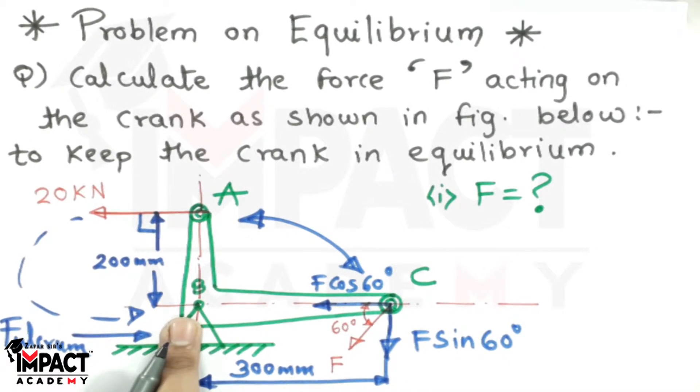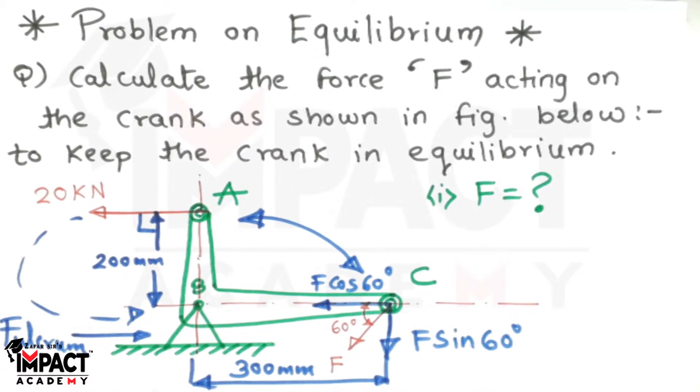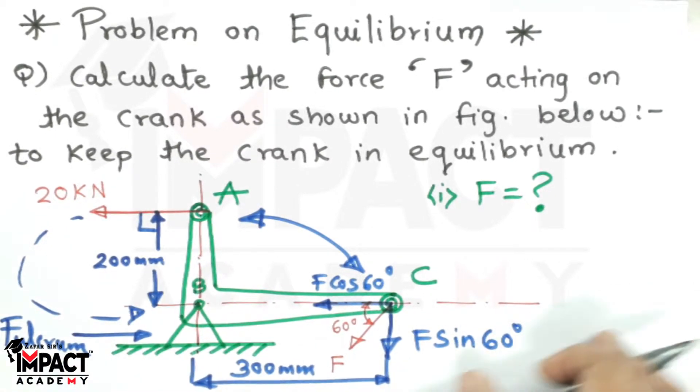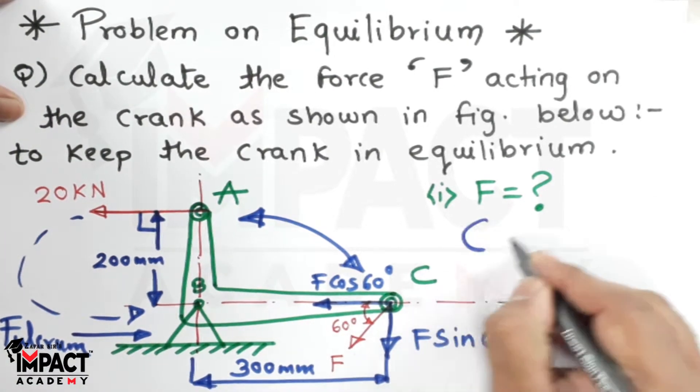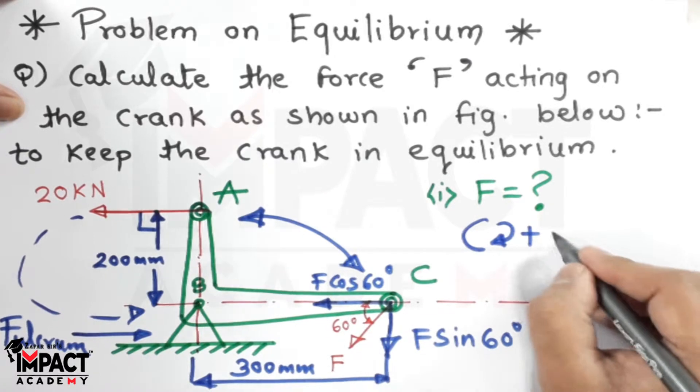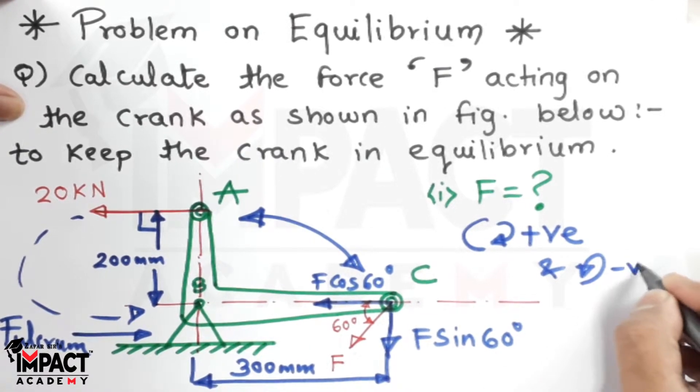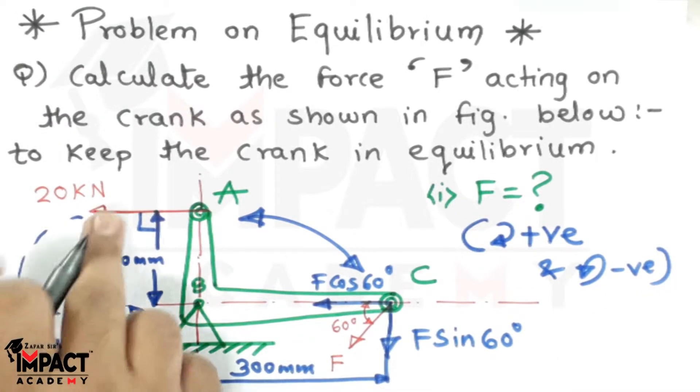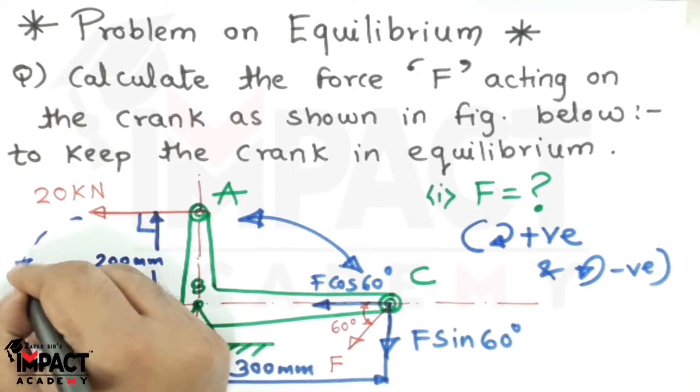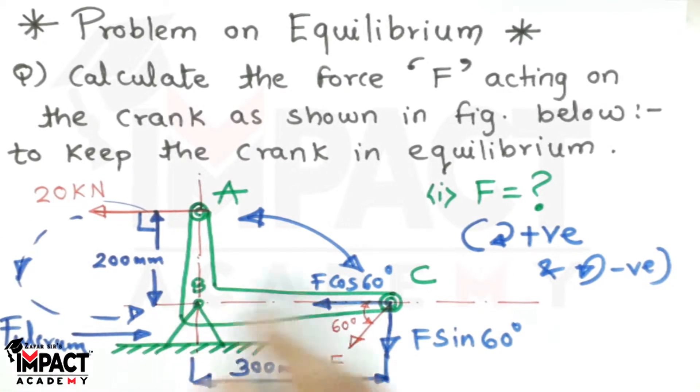I would be taking the moments of all forces about point B and equating it to zero, because that is the condition of equilibrium. As per convention, clockwise moments are treated as positive and anti-clockwise moments are taken as negative. This 20 kN is producing a moment in an anti-clockwise sense, so that would be minus 20 into 200.